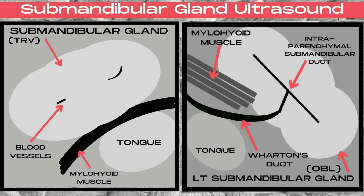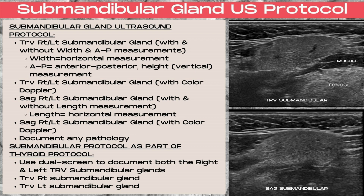It's exceedingly challenging to visualize Wharton's duct unless it is dilated and abnormal, so do not get discouraged if you cannot find this unless pathology is present within the duct. The intraparenchymal submandibular duct would run through the middle when it is visualized. The submandibular glands can also be imaged separately by themselves on an ultrasound or as part of a standard thyroid ultrasound protocol.